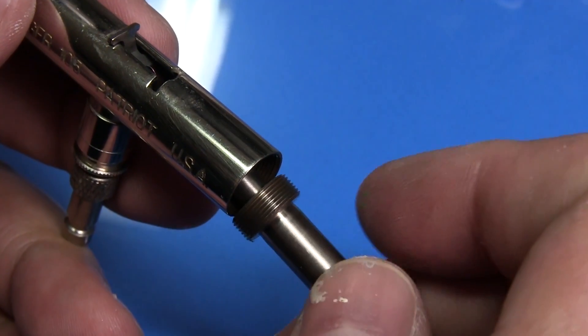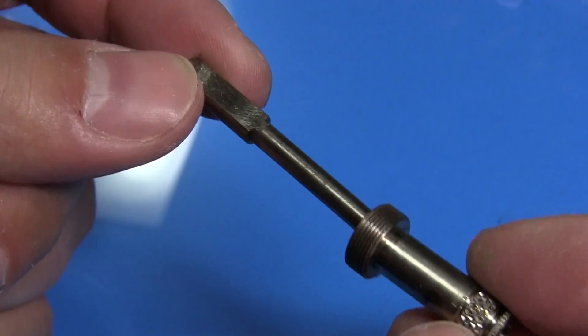Then unscrew the needle tube. This part is called the tube shank.